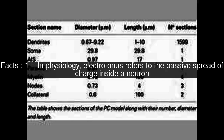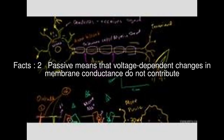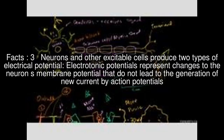In Physiology, Electrotonus refers to the passive spread of charge inside a neuron. Passive means that voltage-dependent changes in membrane conductance do not contribute. Neurons and other excitable cells produce two types of electrical potential. Electrotonic potentials represent changes to the neuron's membrane potential that do not lead to the generation of new current by action potentials.